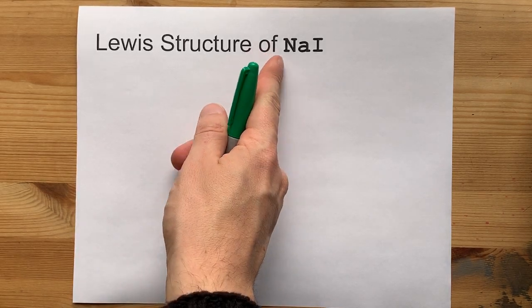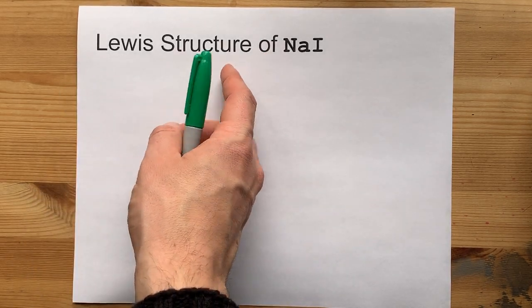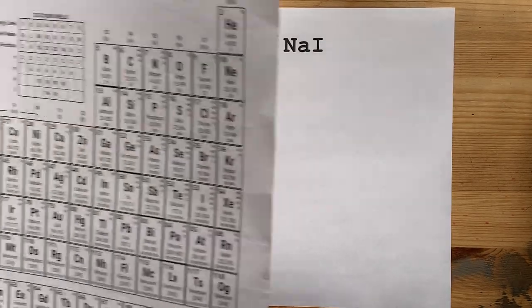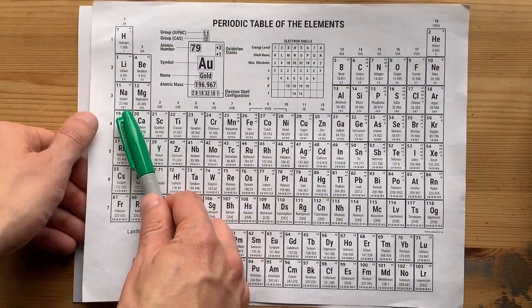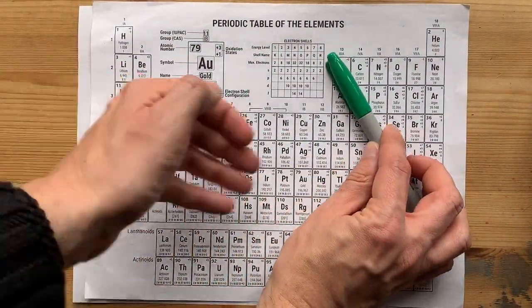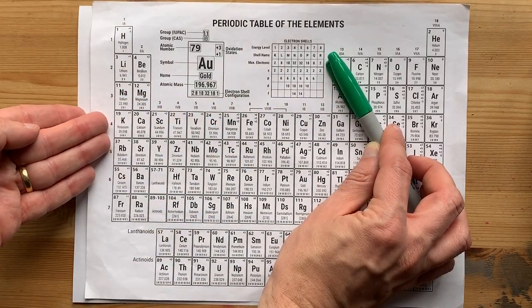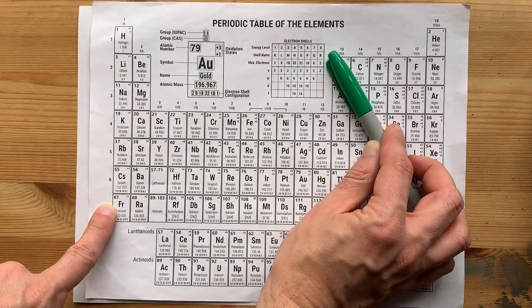Drawing the structure of sodium iodide, the Lewis structure, is not too bad once you realize that Na is a metal. It comes from the left side of the staircase and is in the group called alkali metals.